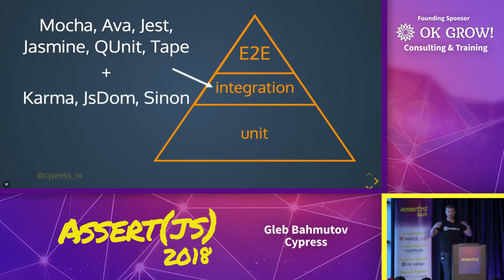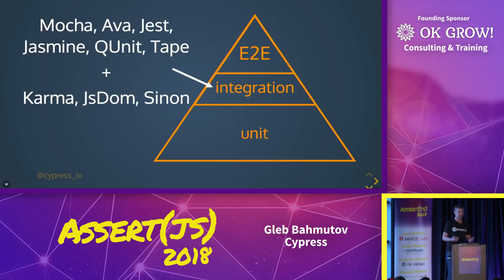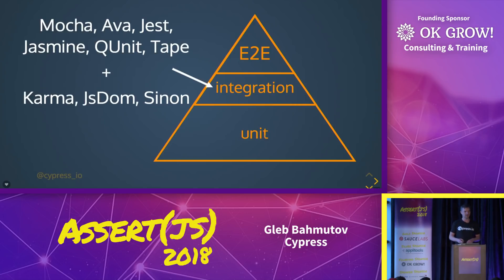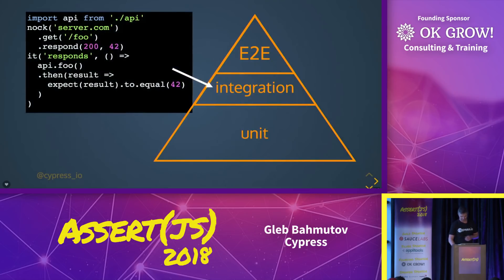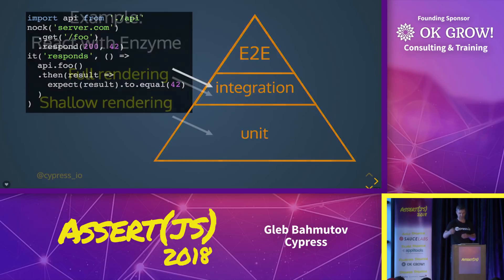Once you move to integration — once you try to put pieces together — you have to bring more tools. For example, now you're putting components together and they need DOM. Where do you get DOM? You probably use JS DOM or try to use Karma to launch a real browser. Now you have to stub things. Some people like stubbing, some don't. But you do have to start stubbing things because maybe you don't have a server yet. I like using Nock so I don't have to have a server.